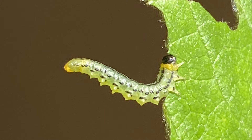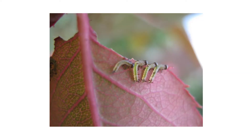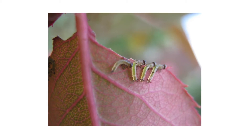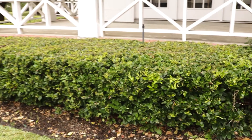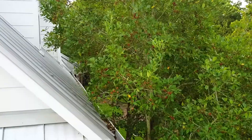Finally, sawfly larvae will exhibit a unique behavior: when feeding in groups and threatened, they'll raise their tail ends as if to sting, even though they lack stingers. Inspection is the next phase of any good pest control plan. Once you know what your pests look like, check around your property to confirm their presence or find hot spots of activity.